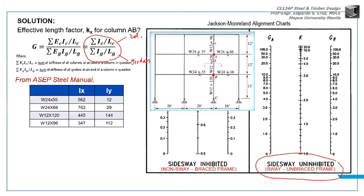Now, from the ASEP steel manual, I first got the moment of inertia of the W sections specified at joint A. Here they all are. Those Ix and Iy values are expressed times 10 to the 6 mm to the 4th. I removed the times 10 to the 6 because it will cancel anyway when solving G, since G is a ratio.